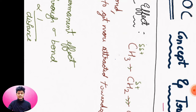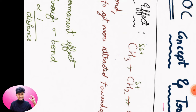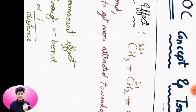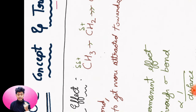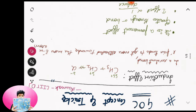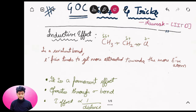First of all, we will talk about GOC — General Organic Chemistry. This is a sub-topic. After that, we will slowly cover one thing at a time: Inductive Effect, Mesomeric Effect, Hyperconjugation, Stability of Carbocation, and Acidity. Without any further delay, let's start.